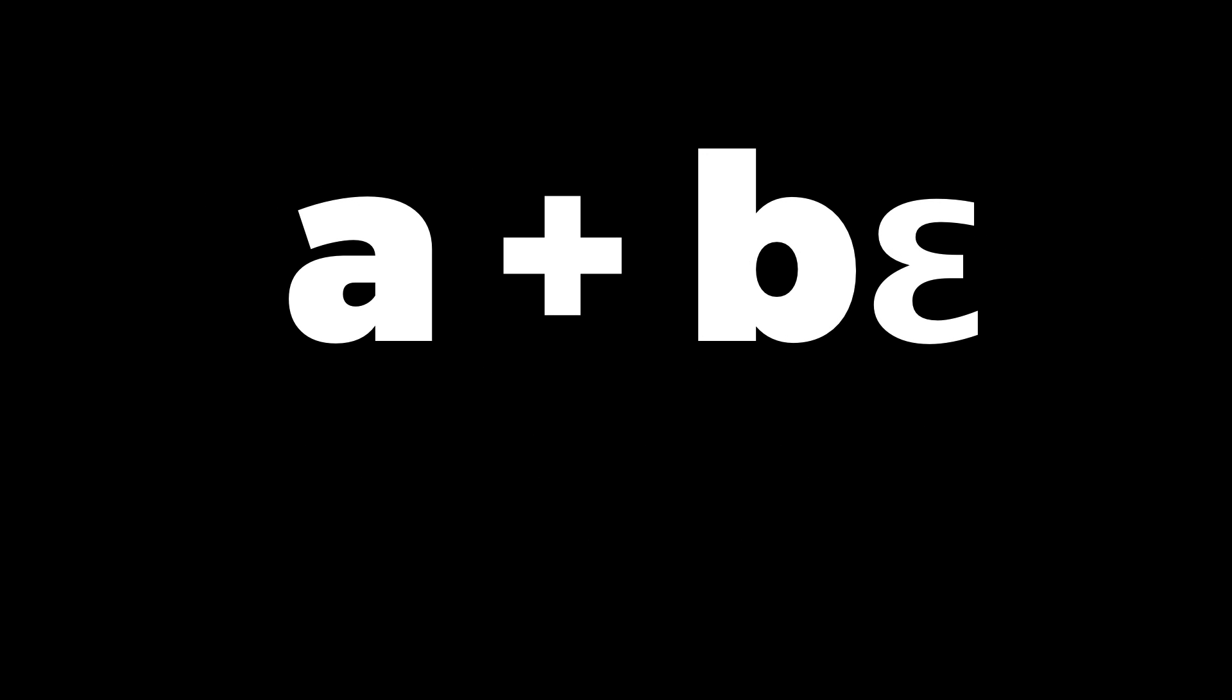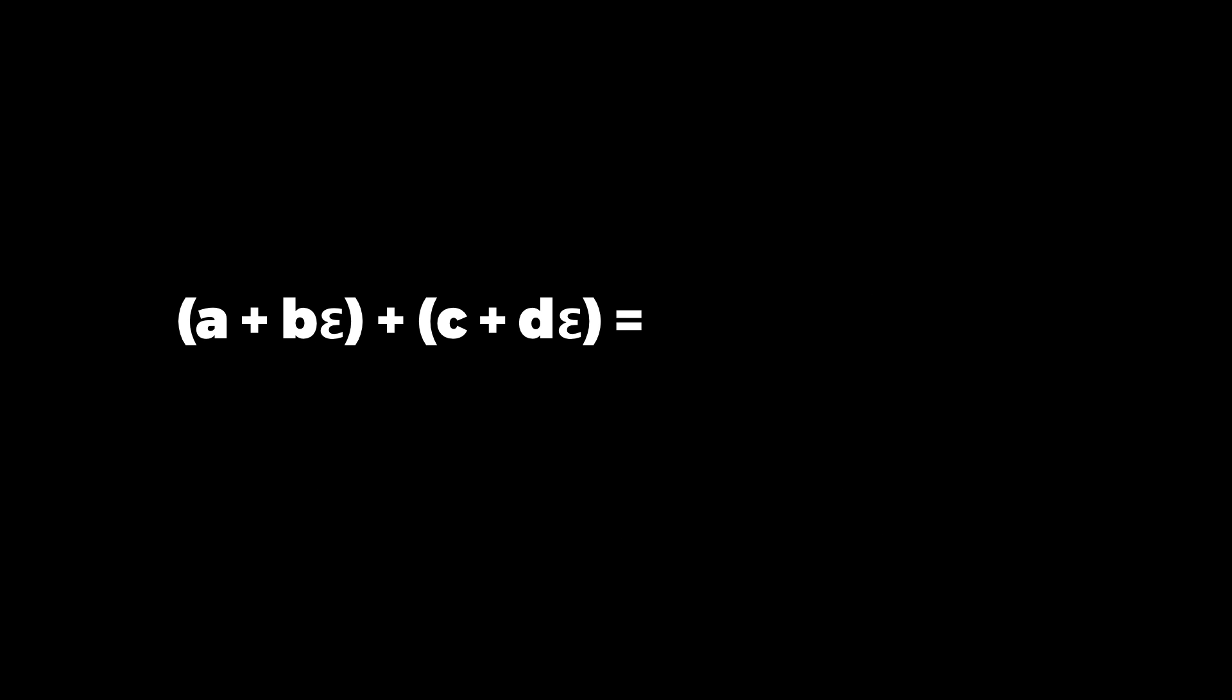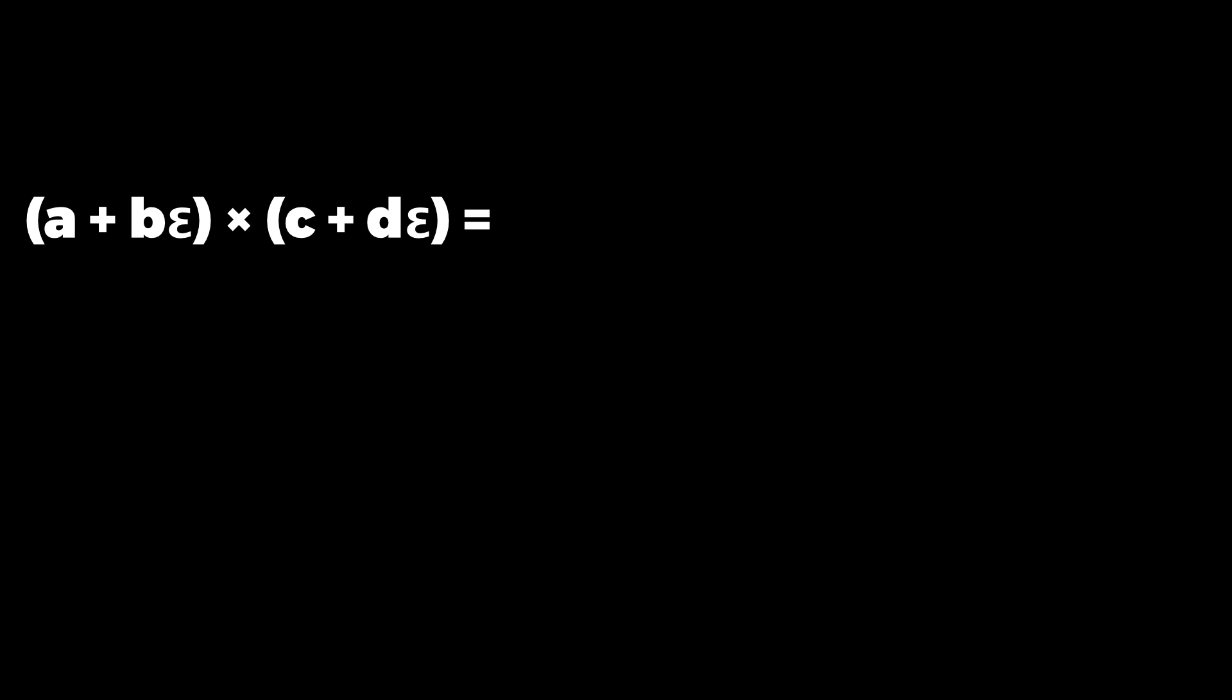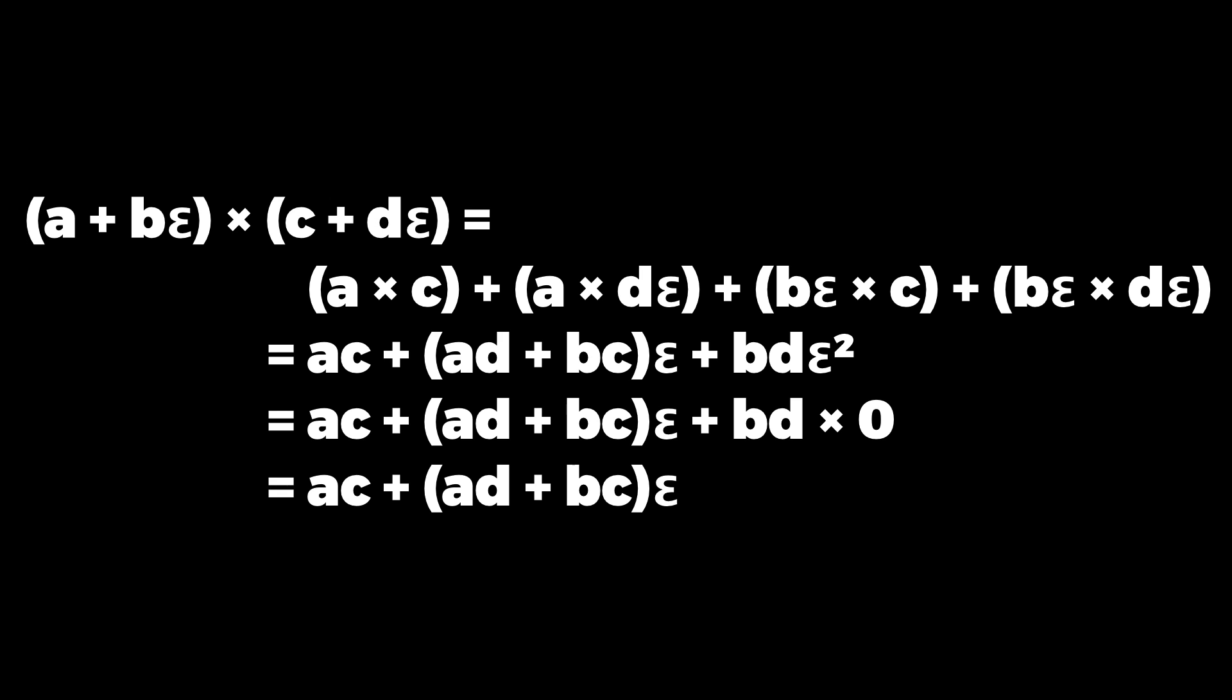We can do exactly the same thing for dual numbers too, but this time we need to know how epsilon behaves. The rule for epsilon is that it's so small that when you multiply it by itself you get zero, and then all the algebra follows in the same way. Adding dual numbers is literally the same. We add all the parts and group the multiples of epsilon. Multiplying is almost the same, we multiply out the brackets and group the multiples, but now we're multiplying by epsilon squared at the end, and epsilon squared is zero, so that last part just goes away.